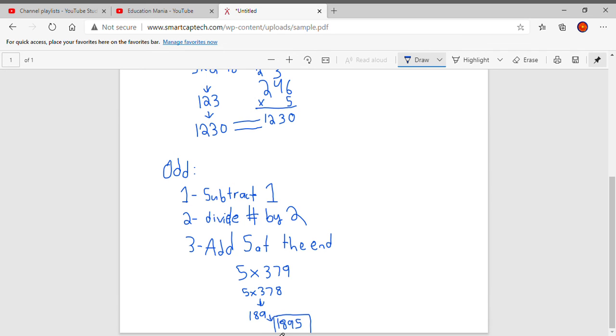Now, once again, let's double check. 379 times five. So nine times five is 45. Five times seven is 35 plus four is 39. And five times three is 15 plus three is 18. So we know that this is true because these two are the same number and they are equal.